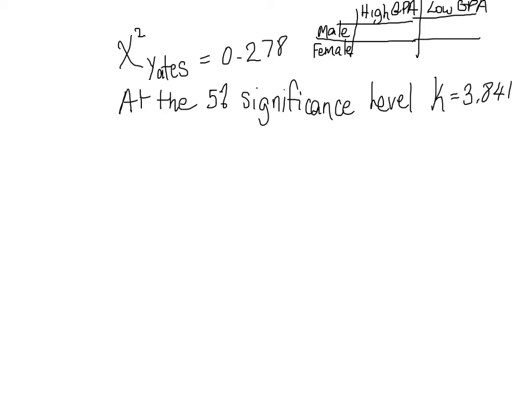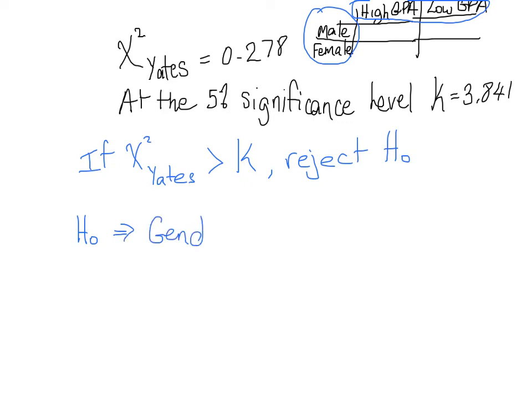And as you may recall, if the chi-squared value in this case that we calculate—so if the one that we calculate is bigger than the critical chi-squared from our critical table of values—we reject our null hypothesis. What's our null hypothesis in this particular case? Well, we have one category which is gender and another category which is GPA. Our null hypothesis states that gender and GPA are independent.